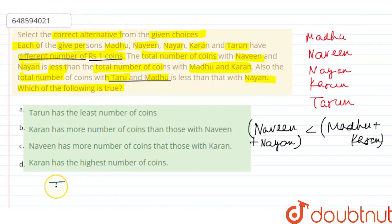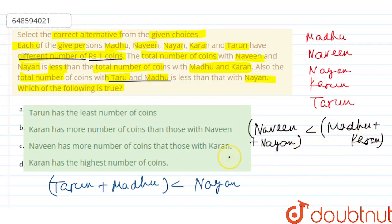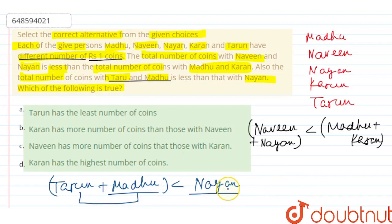तो यहाँ पर given है: Tarun और Madhu के coins का summation करें तो यह value less आ रही है Nayan से। वापस पहली condition पर जाएं: Naveen plus Nayan is less than Madhu plus Karan. इस case में देख रहे हैं कि Naveen और Nayan के coins का summation Madhu-Karan के comparison में कम है, पर individually जो Nayan है उसके coins Madhu से ज़्यादा होंगे, because Madhu और Tarun के coins का summation Nayan से बहुत less आ रही है।